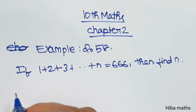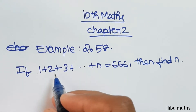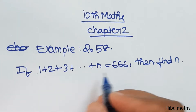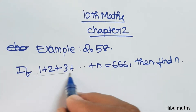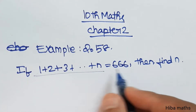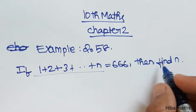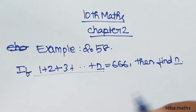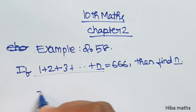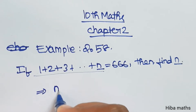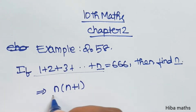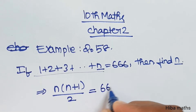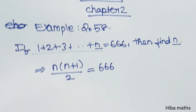Example 2.58: If 1 plus 2 plus 3 up to n terms is equal to 666, so the sum of natural numbers is equal to 666. Find n. If n value is equal to n, the sum of natural numbers is equal to 666.